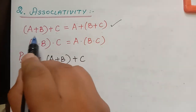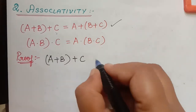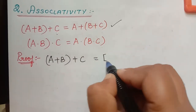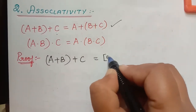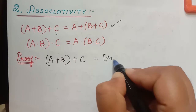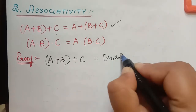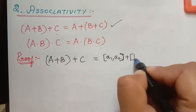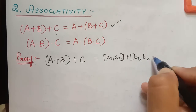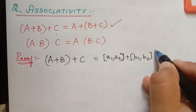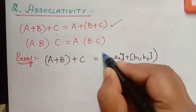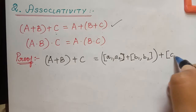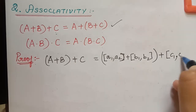To prove this, first we shall consider the left hand side, that is (A plus B) plus C. So that is equal to — now what is A plus B? It is the closed interval [a1, a2] plus closed interval [b1, b2], and that is in turn plus closed interval [c1, c2].